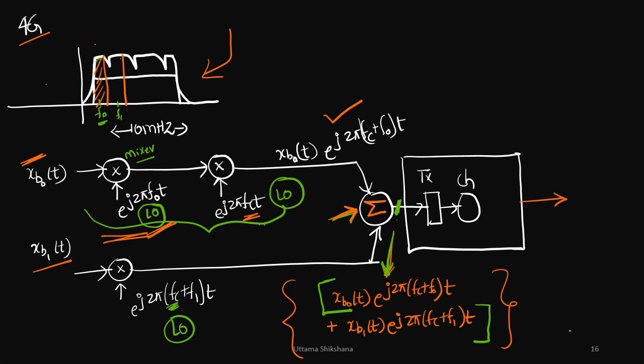If you see clearly, the center frequency fc is common in all these subband chains, so this can be taken common or this can be taken out and we can try to implement this after the multiplexing operation.